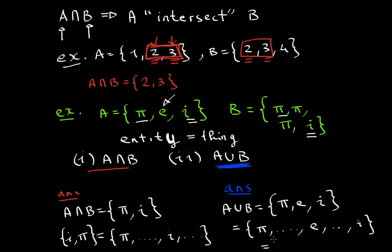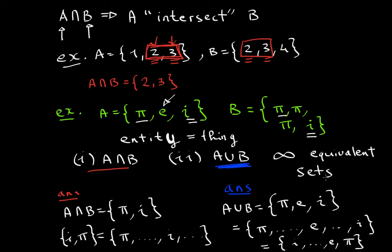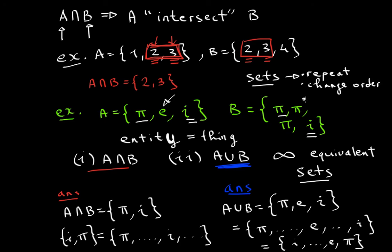What I'm telling you is that if you have a set, there are infinite equivalent sets to any given set, because you could repeat elements however many times you want and switch up the order — you're basically permuting your sets. That's covered in the permutations and combinations unit, which I'll cover in the advanced functions series. For now, all you need to know is that for sets, you can repeat elements and change their order, and you should be able to unionize them and intersect them. That's your main takeaway from this lecture.